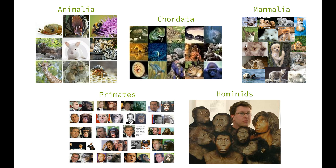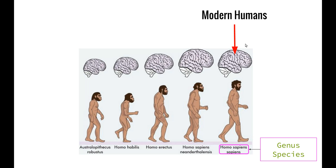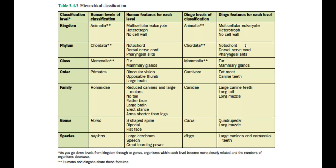Furthermore, we can narrow it down into the hominid group. We can see how the hominid group has changed over time, and we've now got to our modern humans, known as Homo sapiens sapiens, which is our genus and species name. The brain size is probably the most noticeable feature about humans compared to the other hominid groups. We can also look at a table showing the features for each level — kingdom, phylum, class, order, family, genus, and species.